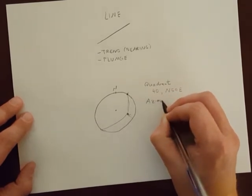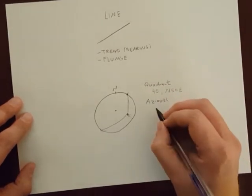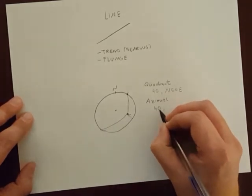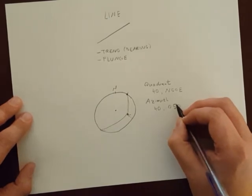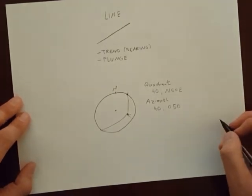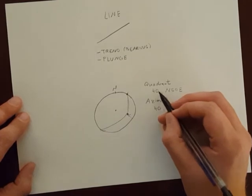The other convention is azimuth notation. Here we'll write down the plunge, and instead of writing down the quadrant notation for the direction of the trend, we'll write down the azimuth.